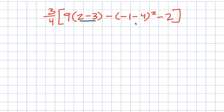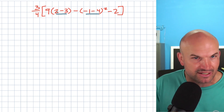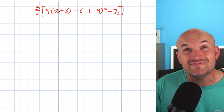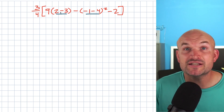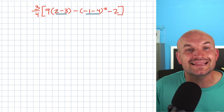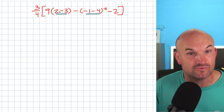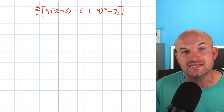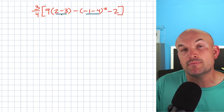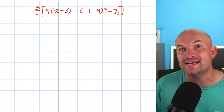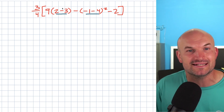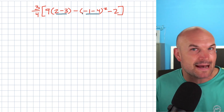I have a two minus three inside these parentheses and a negative one minus four inside these parentheses. We can do both of them at the same time. And it's very, very important to make sure you simplify your expression and leave the parentheses there. Don't just get rid of the parentheses, because we only want to get rid of parentheses once we've applied an operation that eliminates that.